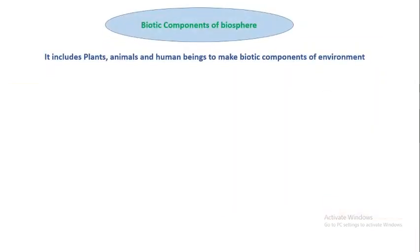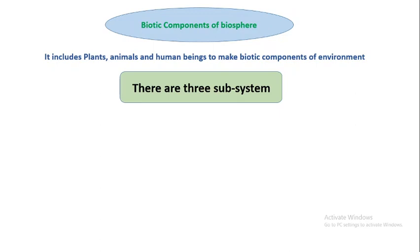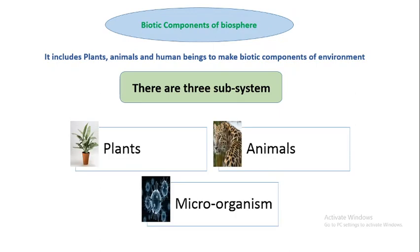Biotic components of biosphere include plants, animals, and human beings. There are three subsystems of the biotic components of biosphere: plants, animals, and microorganisms. So the whole biosphere consists of these three types of organisms.